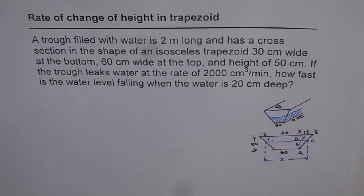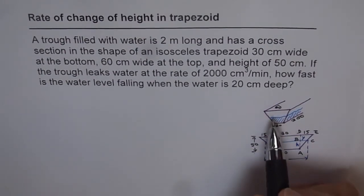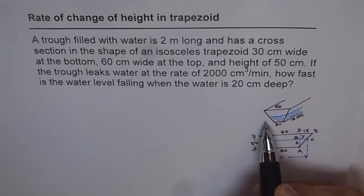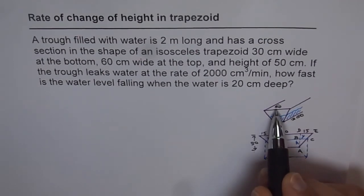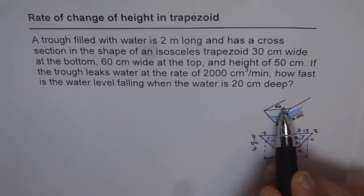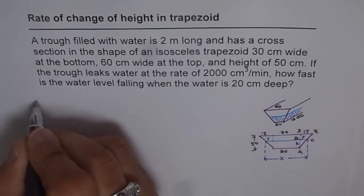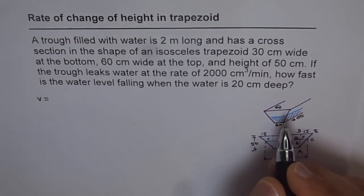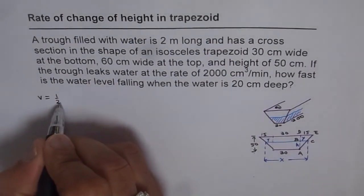Here are my suggestions for solving it. You should know the area of an isosceles trapezoid: the area of this cross section is half the sum of the two parallel sides multiplied by the height. Therefore, volume will be the area times the length. So we can write the volume of this trough as half the height times top plus bottom, times the length.